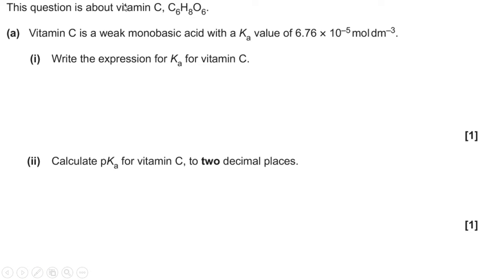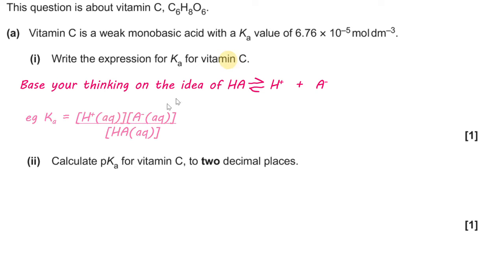So, it tells you a little bit about vitamin C, namely its molecular formula, and it says it's a weak monobasic acid with a Ka value. And you may need to base your thinking for the first one, which is write the expression for Ka with vitamin C on HA dissociating to H plus and A minus.